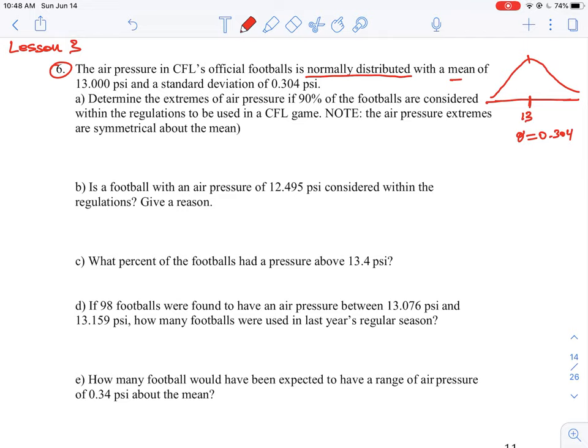So it says determine the extremes of air pressure if 90% of the footballs are considered within regulation of the game. So 90%, how do we understand 90% in terms of the distribution? So what you want to do is think about 90% being in the middle of the 100% of the distribution of the curve, so 90% would essentially be the first, it's the part that encompasses the vast majority of the curve. This is the 90% region right here.